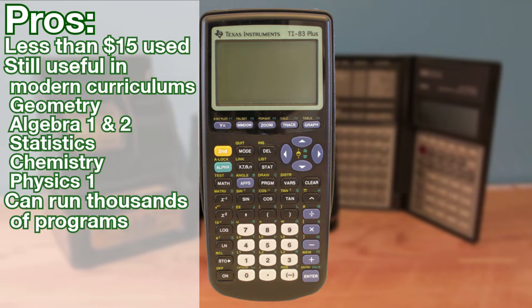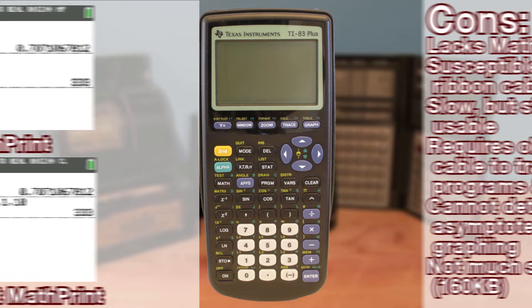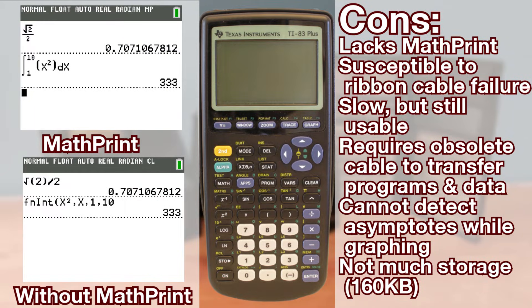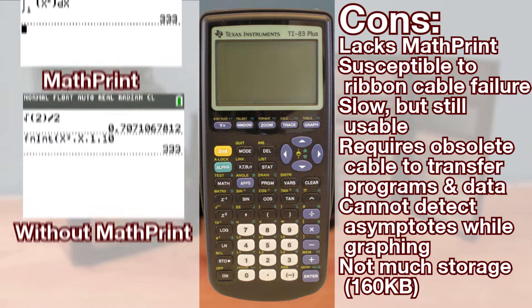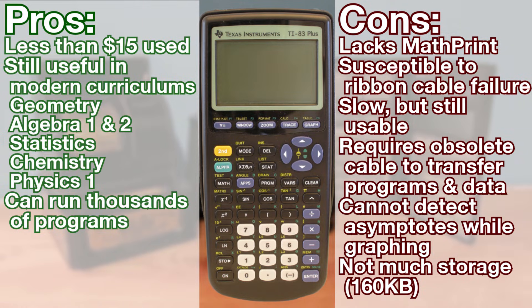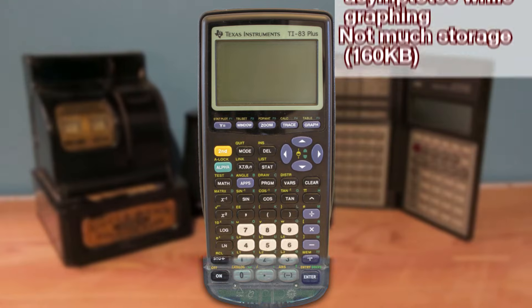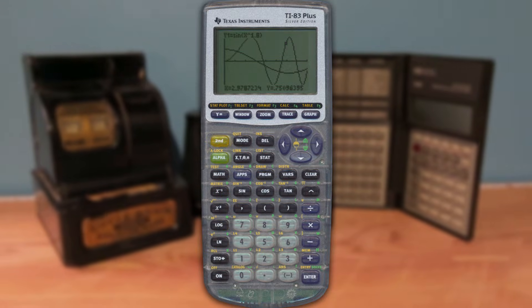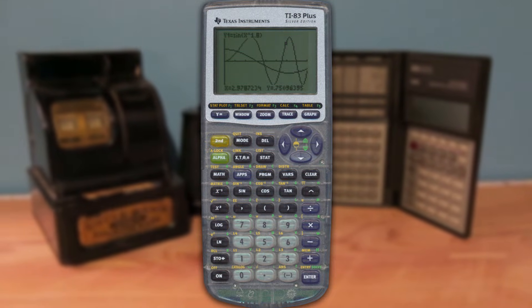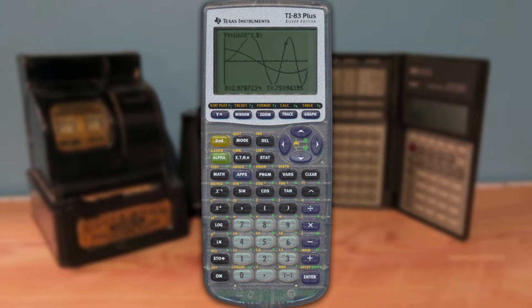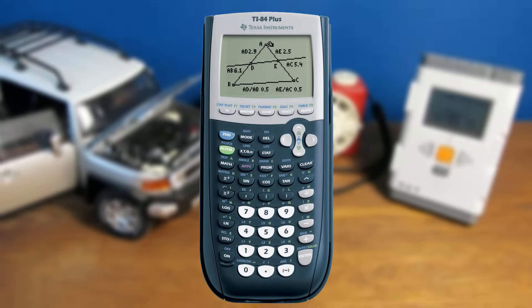The TI-83 Plus does lack a few big features such as math print, which makes input and results more readable by formatting your equations. The TI-83 Plus is also slower than a TI-84 Plus, unless you get the slightly newer TI-83 Plus Silver Edition. However, if you have a budget for the TI-83 Plus Silver Edition, I'd suggest upgrading to the TI-84 Plus.